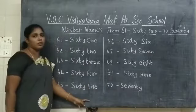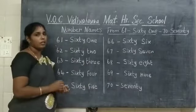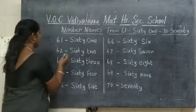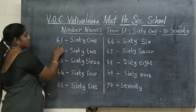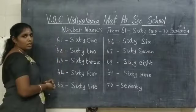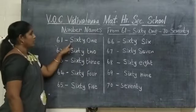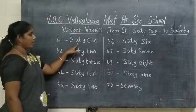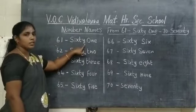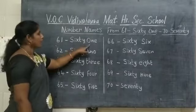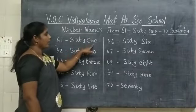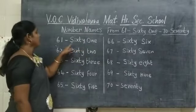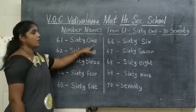Did you understand, children? Okay, once again I am going to revise. Okay children — 6, 1 — 61. Yes, S-I-X-T-Y O-N-E. 61.